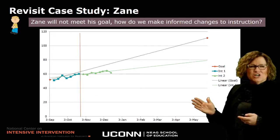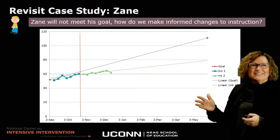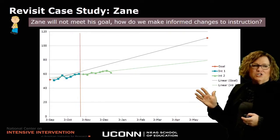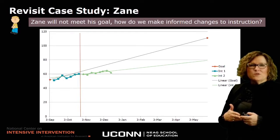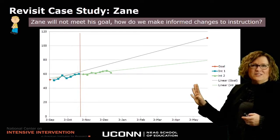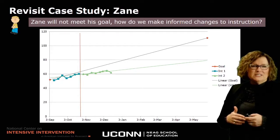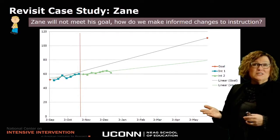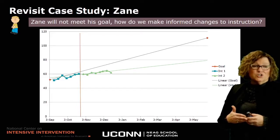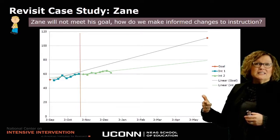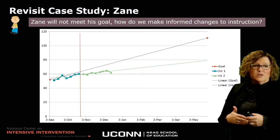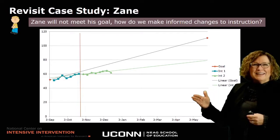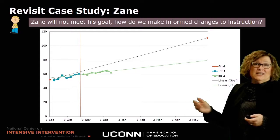So how do we make informed changes to instruction for Zane to get him back on track? Ms. Smith, his teacher, has created some mastery assessments for Zane — word lists that determine whether or not Zane was learning to read specific word forms that Ms. Smith was teaching. She's also using his oral reading fluency performance and CBM measures to do some miscue analysis to identify additional word types that he might be having difficulty with, trying to use that information to make a change that will help Zane be more successful.